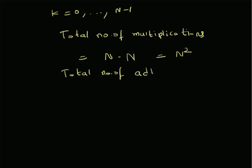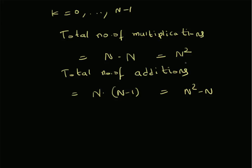The total number of complex additions is N times (N minus one), which equals N squared minus N. So for the original definition of the DFT, the total number of complex multiplications is N squared and the total number of complex additions is N squared minus N. Hence the number of computations is of order N squared. Thanks for watching.